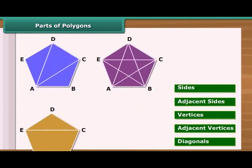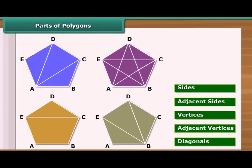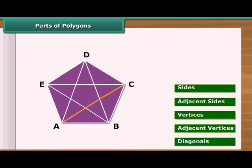Line segments joining non-adjacent vertices are called diagonals of the polygon. For example, AC, AD, BD, BE, CE are diagonals of the given polygon.